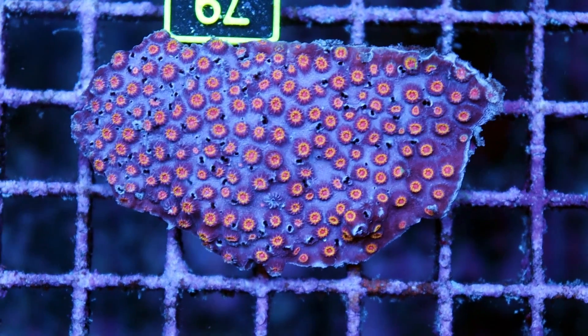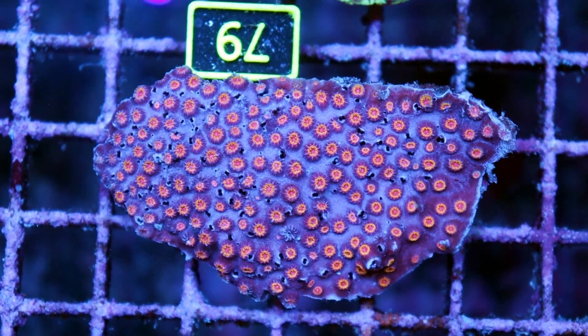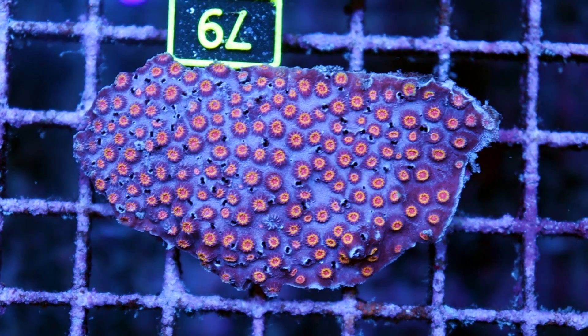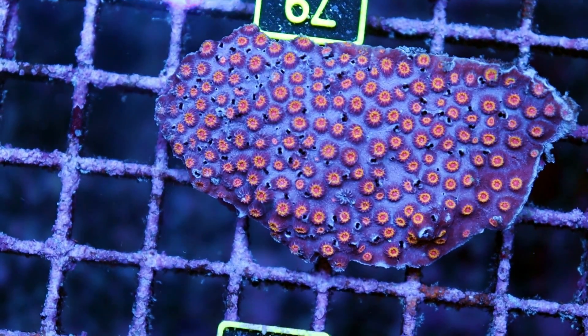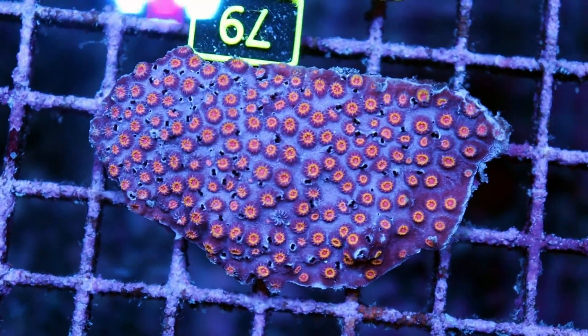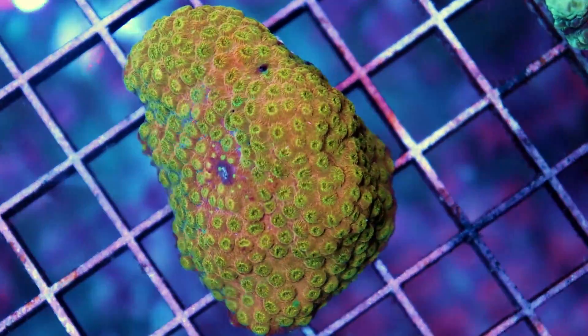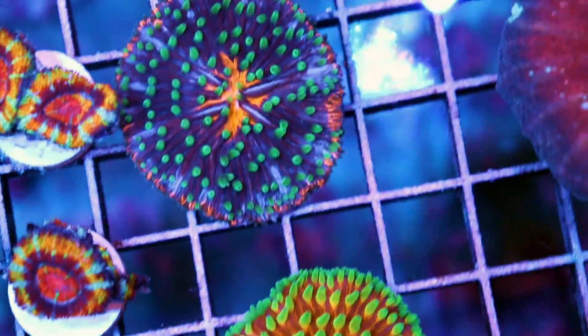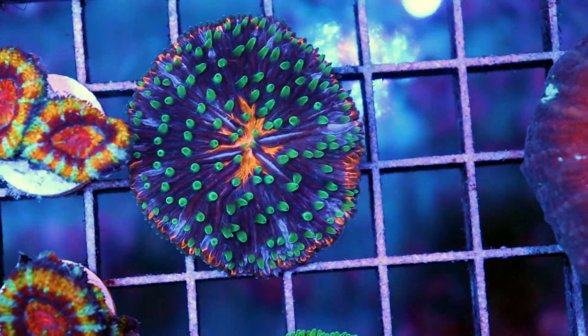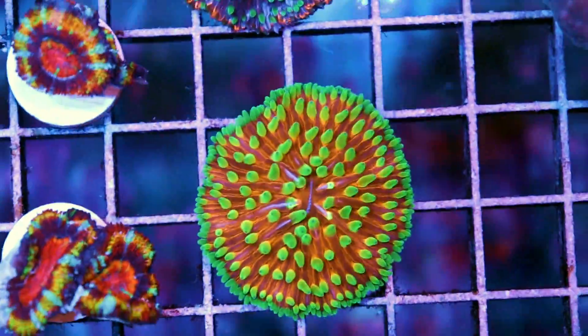Over here we got some really cool Cyphastrea, so that's an encrusting LPS coral, and I think I saw a really nice orange one as well. Usually if I get a new color in, I'll save a piece and add it to our farm to grow it out and add it to our collection. I've had this one in the past, it gets way, way nicer than this. It gets like a bright orange yellow. Oh never mind, look at these. How did I not see these last night? That is a nice plate coral. Same with this one over here.